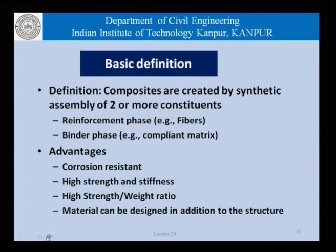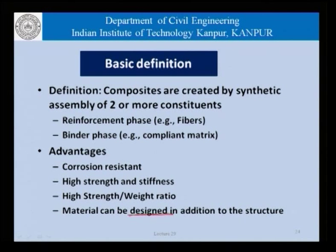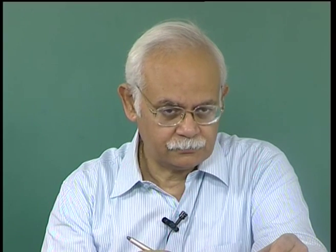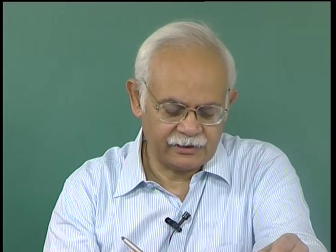Composites are a synthetic assembly of two or more constituents comprising the fiber phase, which is the reinforcement, and the matrix. They have the advantages of being corrosion resistant, having high strength and stiffness, a high strength-to-weight ratio, and the material can be designed in addition to the structure. The use of CFRM gives us the flexibility of actually designing the material itself by varying the fiber content and material.